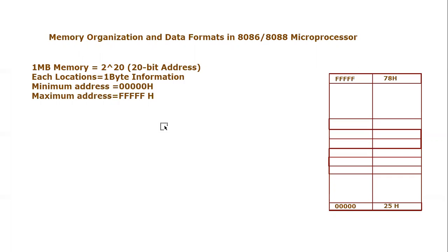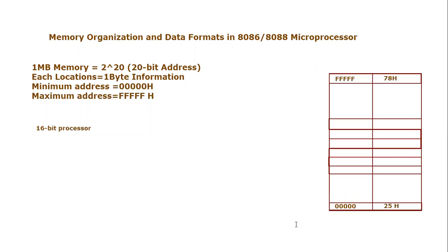Now one thing we need to know: memory is organized as bytes and you can access these bytes, but the 8086 and 8088 are 16-bit processors. These processors need 16 bits, so they will not access only one byte or one location from memory. Rather, they will be accessing two locations simultaneously, since each location holds one byte and 16 bits can only come from two locations.